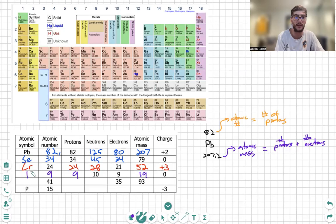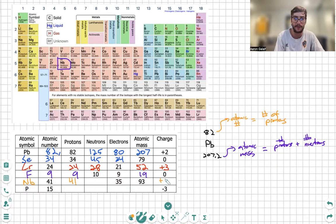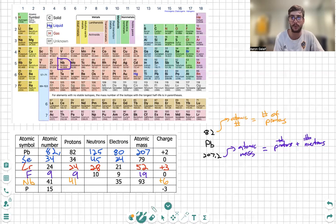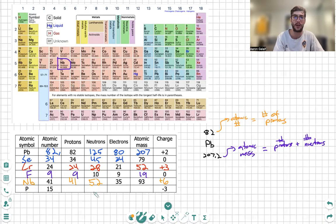Two more. Atomic number of 41, we find it right here - niobium. We have 35 electrons, 41 protons, so we have a plus six charge - six more protons than electrons. And then we're going to take the atomic mass, subtract it from the number of protons to get our number of neutrons. Beautiful, absolutely beautiful.